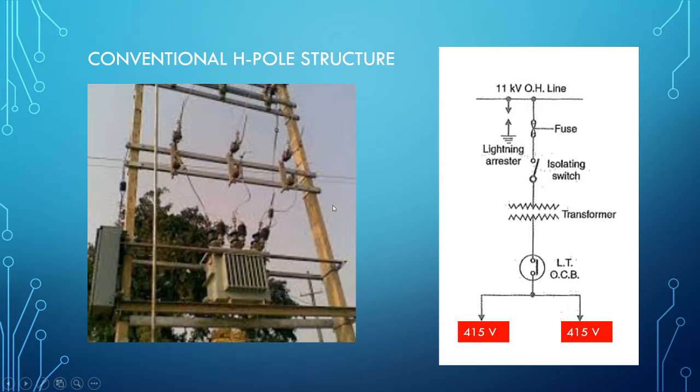It's like H-shape and where the transformer is sitting over the pole and which connects to the substation this side and another side connecting to the consumers. If you see this transformer, it is the isolators and circuit breaker. Everything is exposed to outer. Everything is open and you see the right hand side, this is the diagram.